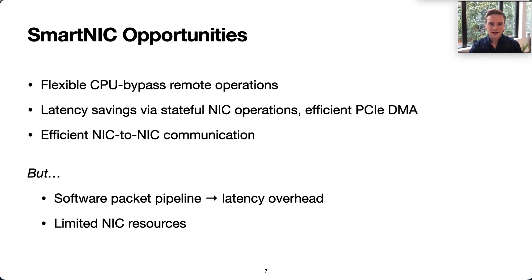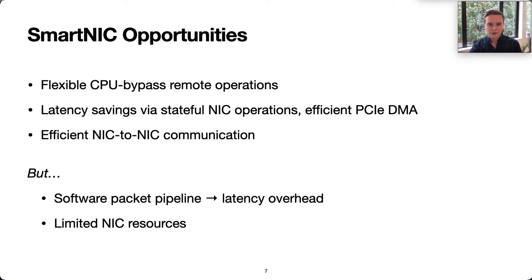However, these opportunities do come at a cost. The SmartNIC's software packet processing results in higher latency than one-sided RDMA for an equivalent remote access. Also, the NIC's compute and memory resources are limited. So, in order to benefit from SmartNICs, we must be able to significantly optimize the protocol and its communication, and also selectively offload work to the NIC to avoid being limited by its resources.